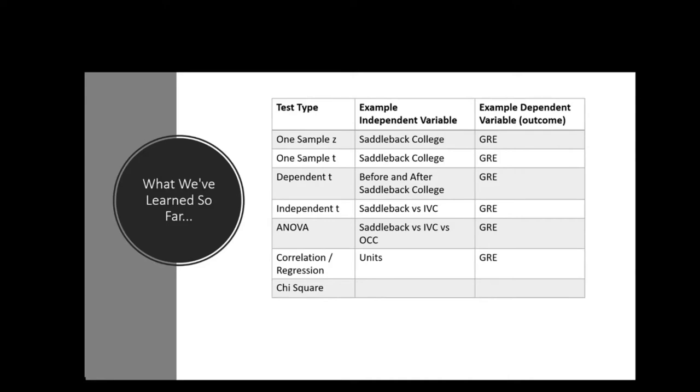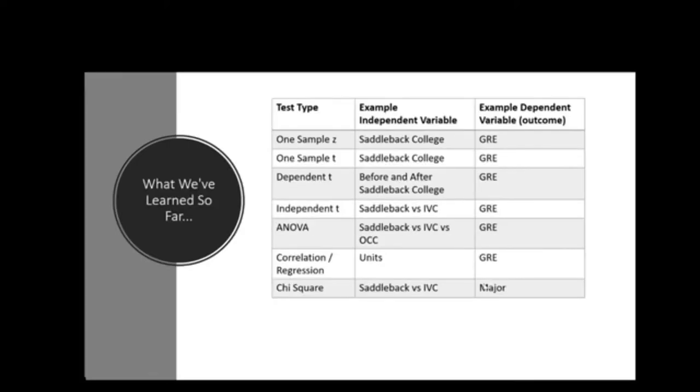For a chi-square perhaps what I would do then is say well what about Saddleback versus IVC students. And I might just be interested in are there more Saddleback College students versus IVC students. But I could also use that to predict what their major was. So notice it can't be GRE because that's a number outcome. But maybe I want to see how Saddleback College and IVC differ in the number of majors or the types of majors that people select. Now if I was just interested in one variable for the chi-square. Let's say I wanted to know if there were the same number of students enrolled in Saddleback as in IVC. I could do what is called a goodness of fit. And what will happen is if we want to see if the same number of students are enrolled in Saddleback and IVC, I might want to see if my total count for both populations is 50% for Saddleback and 50% for IVC.